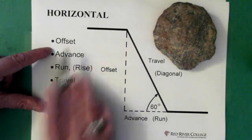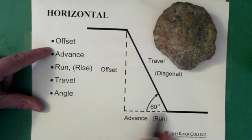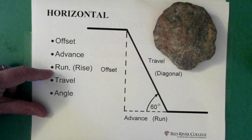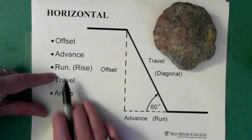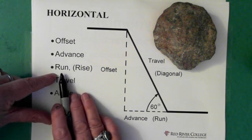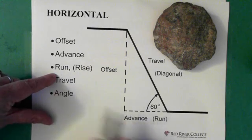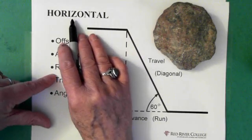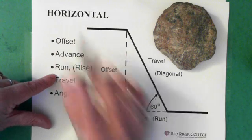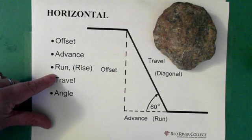So our offset, the advance, is the piece that we've moved forward. And in this case, the thing we're concerned about with regards to the advance, the other name for the advance, is the run. So in a horizontal parallel offset, this distance is called the run.